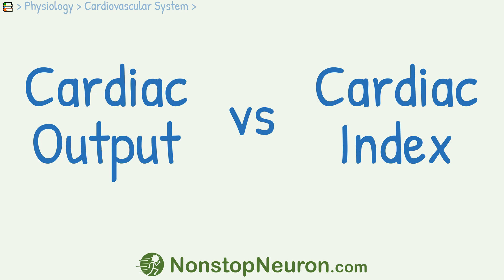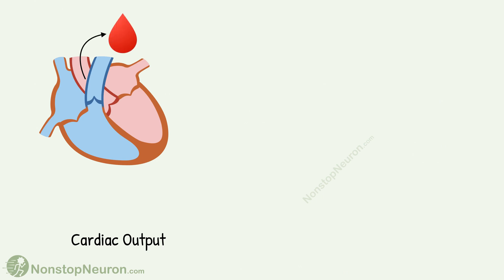In this video, we will understand the difference between cardiac output and cardiac index. Cardiac output is the quantity of blood pumped by the heart into the systemic circulation in unit time. Normally, the heart pumps about 5 liters of blood into the circulation every minute, so the cardiac output is about 5 liters per minute.